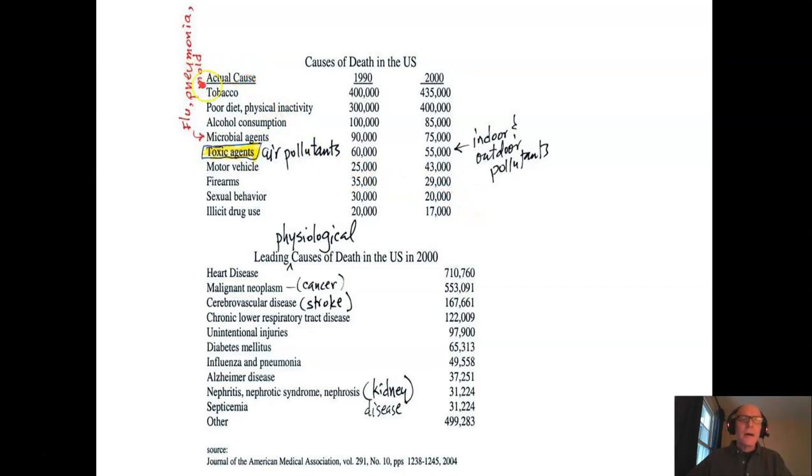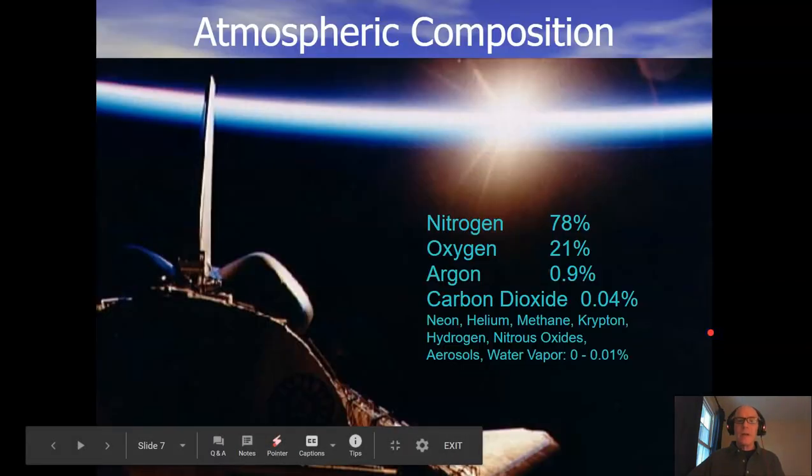If you take a look at actual causes of death 1990-2000, air pollution, both indoor and outdoor air pollution, toxic agents is fifth in cause of death. Noted fourth is microbial agents, flu, pneumonia, etc. and we're all acutely aware of that. Physiological actual causes of death, things like heart disease or cancer, respiratory illnesses is number four in 2000. So it has an absolute effect on human health.